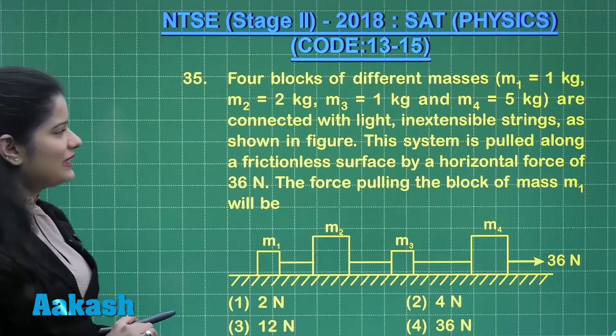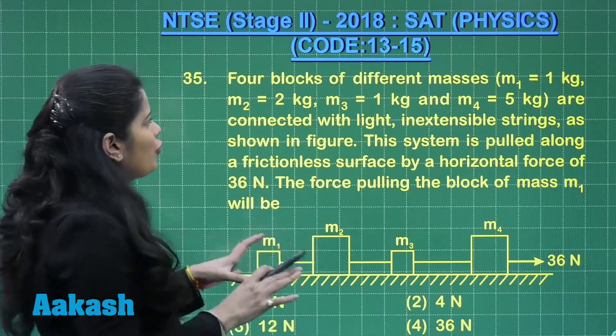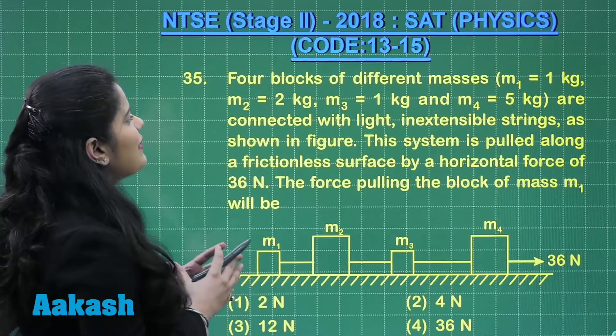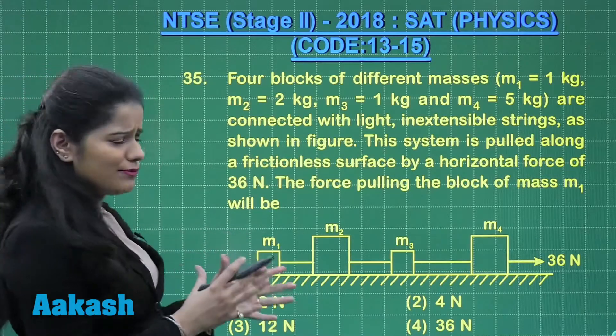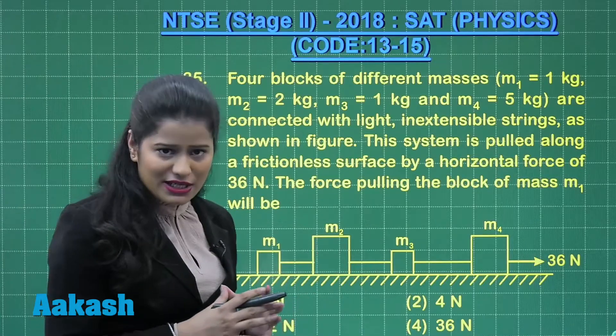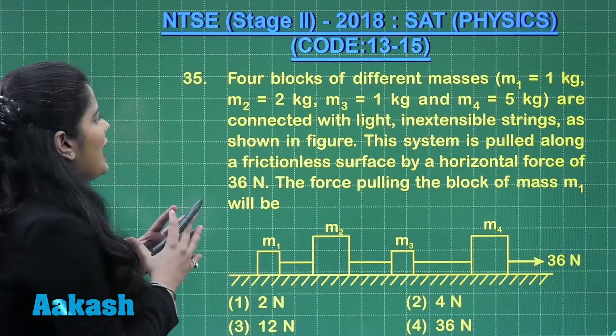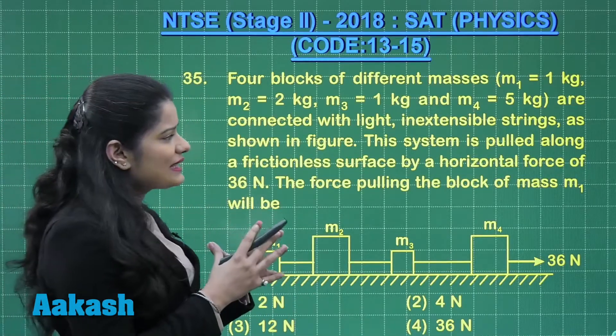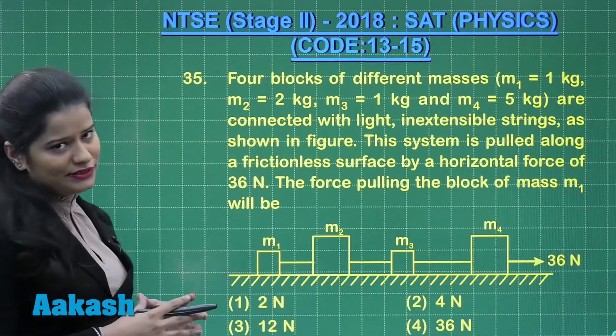Here we have the next question which is question number 35 on the board which says 4 blocks of different masses M1, M2, M3 and M4. The value of all the masses are given to us here in the question are connected with light in extensible strings as shown in the figure.